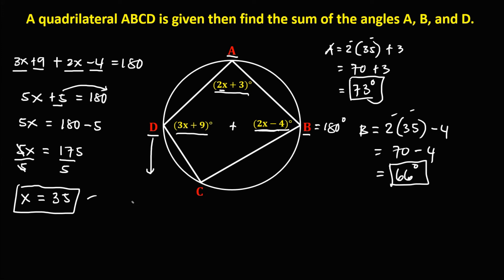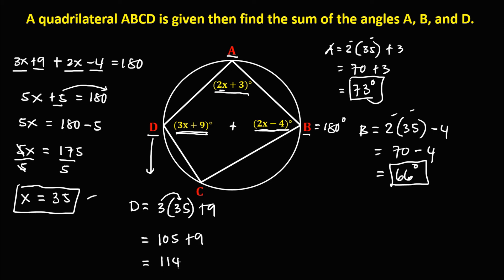For angle D, from this equation, we have 3 times x — x is 35 — then plus 9. So 3 times 35 is 105, then plus 9 — angle D is 114 degrees.